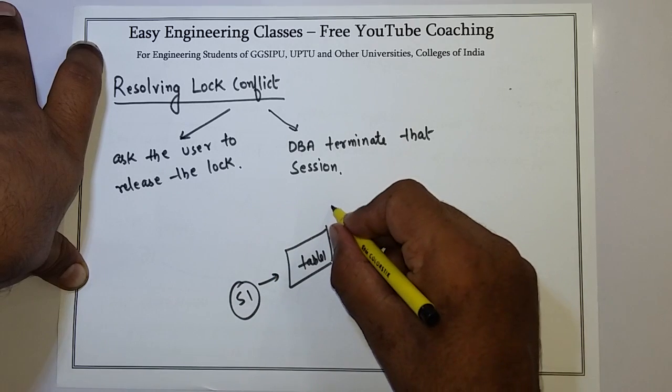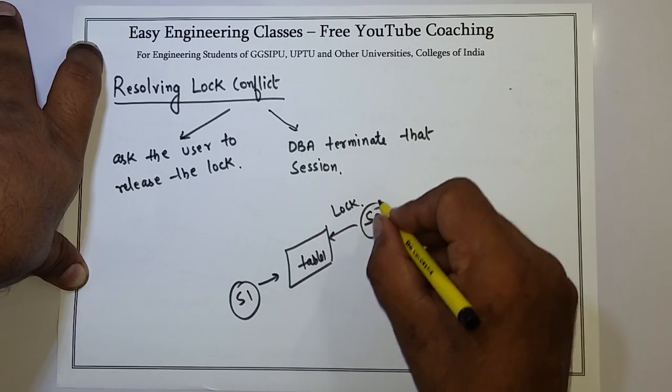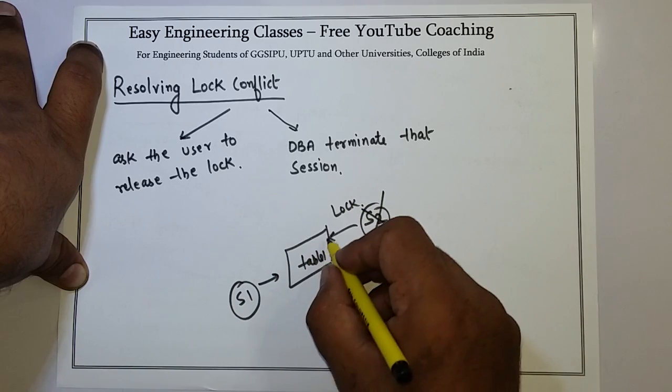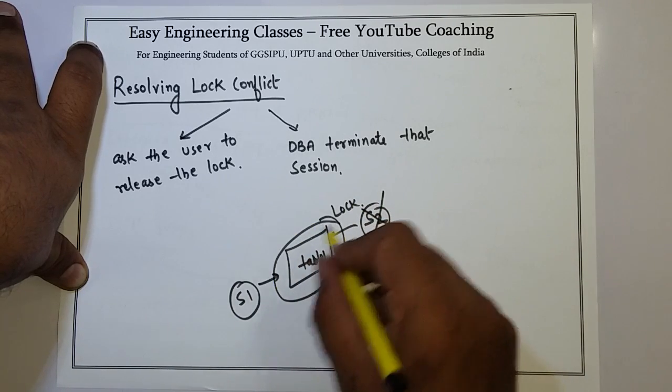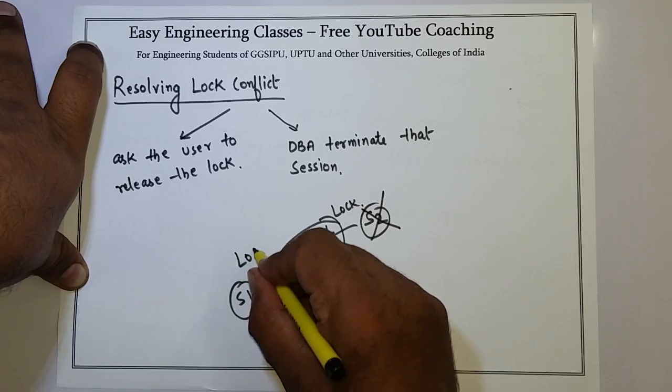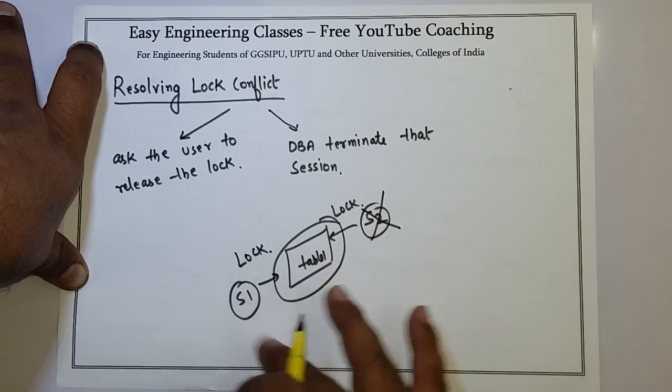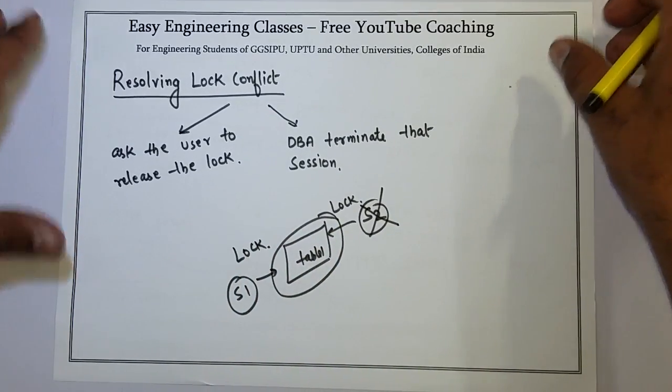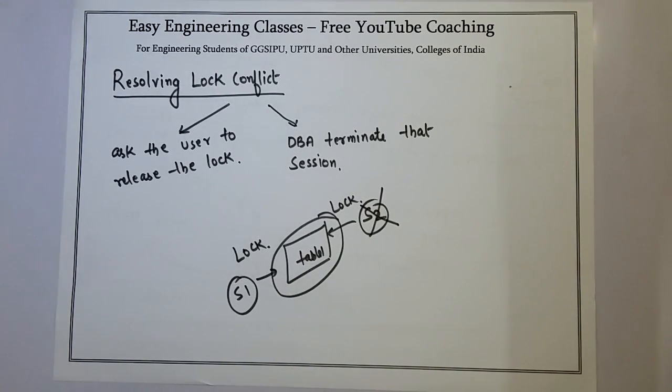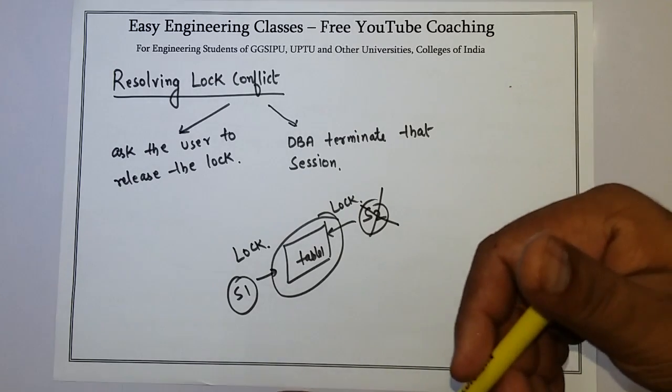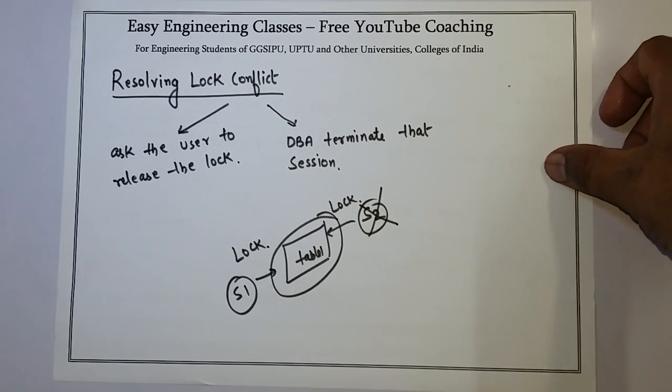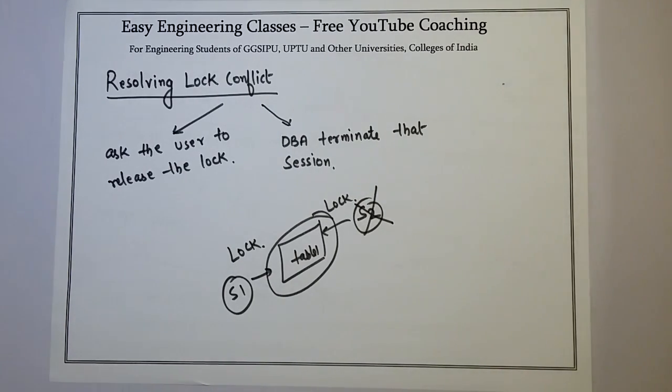So once the lock is released or this is terminated, then this particular resource becomes available and S1 can now lock this particular table to access the data. So this is a very brief introduction about lock conflict, how lock conflict occurs, and the way for database administrator to detect the locks and how we can resolve the lock conflict. Thank you.